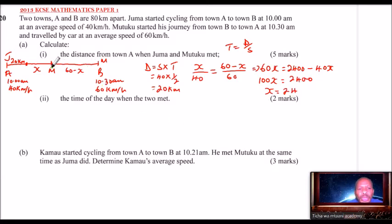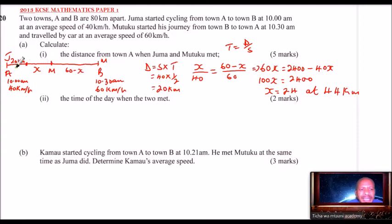To find the meeting point M: Juma had covered 20 km before Mutuku started, so they met at 20 plus 24, which gives 44 kilometers from town A.